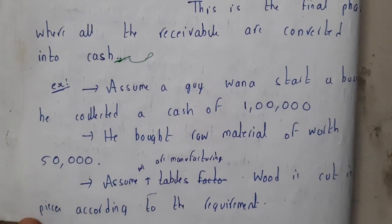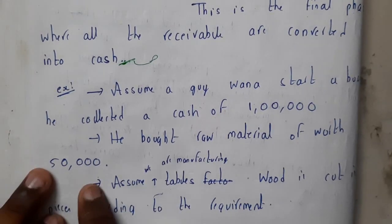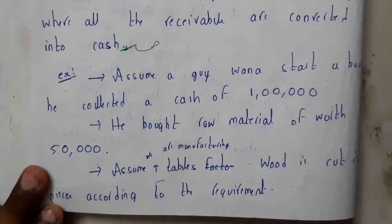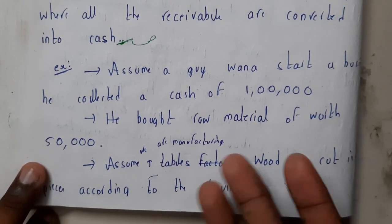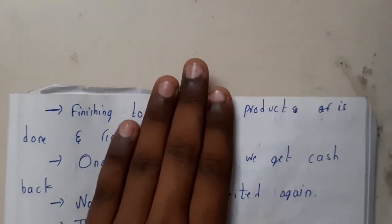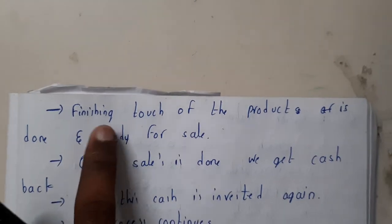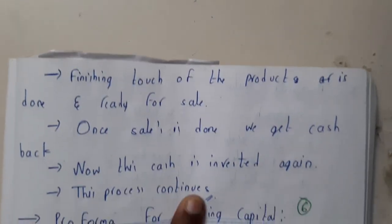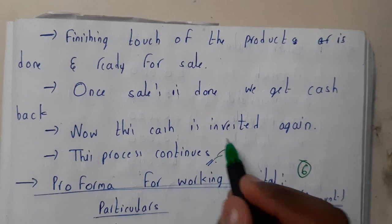Let us go through a small example for a clear idea. Assume a person wants to start a business and collects one lakh in cash. He spends fifty thousand to buy raw materials to manufacture tables. Workers cut the wood according to requirements, then plywood or other materials are added to make the table look attractive, and sharp edges are smoothened as finishing touches. Once complete, the tables are sent for sale and cash is received back.